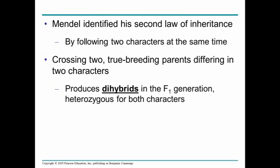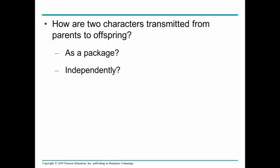When we're looking at two different genes at the same time, Mendel called this a dihybrid, and he was curious as to how the parents passed on their traits — did they pass them on together as one big lump sum, as a package, or were they passed on independently?